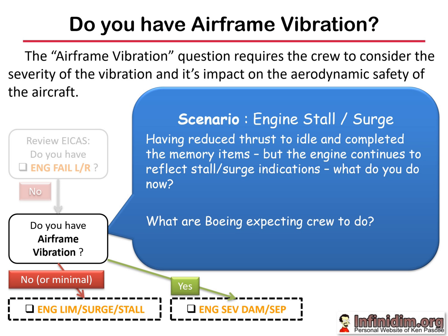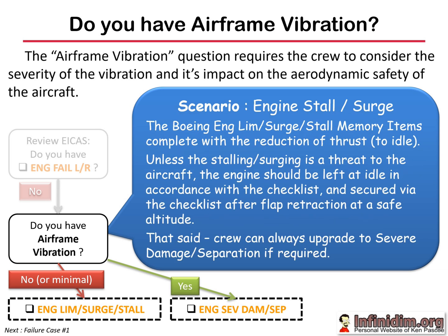Typically a stalling and surging engine at idle thrust is not a threat to the aircraft - it's distracting, it's annoying, it's even bad for PR, but it's not an impact on flight safety. The stall/surge/limit checklist memory items leave the engine running at idle even if it's still stalling and surging until the airplane is cleaned up and the non-normal checklist is run. Broadly speaking, if the failure wasn't bad enough at takeoff thrust to cause you to go straight to severe damage/separation, then the impact on the ability to fly the aircraft safely when it's stalling and surging at idle should be negligible. The checklist will secure the engine once the airplane is clean at a safe altitude, and that's in keeping with Boeing's non-normal checklist philosophy. That said, crew always retain the right to implement severe damage/separation memory items to secure the engine if you think it's the safest course of action.